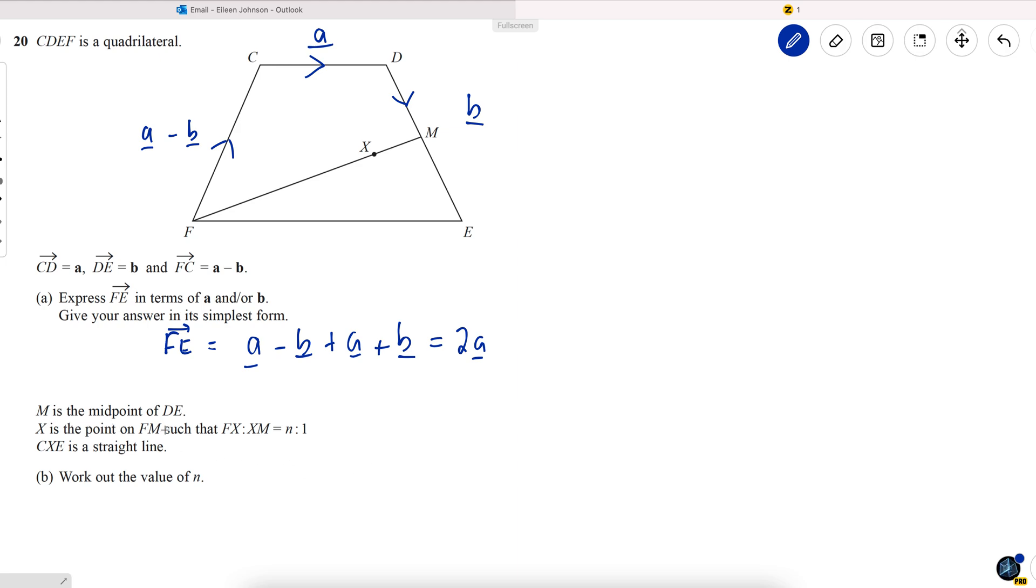M is the midpoint of DE, so that means these vectors here are both a half B. X is the point on FM, such that FX to XM equals N to 1. I'm going to write these as fractions on this line. So if the line's divided up in the ratio N to 1, this part is N over N plus 1, and this part is 1 over N plus 1. CXE is in a straight line. Work out the value of N.